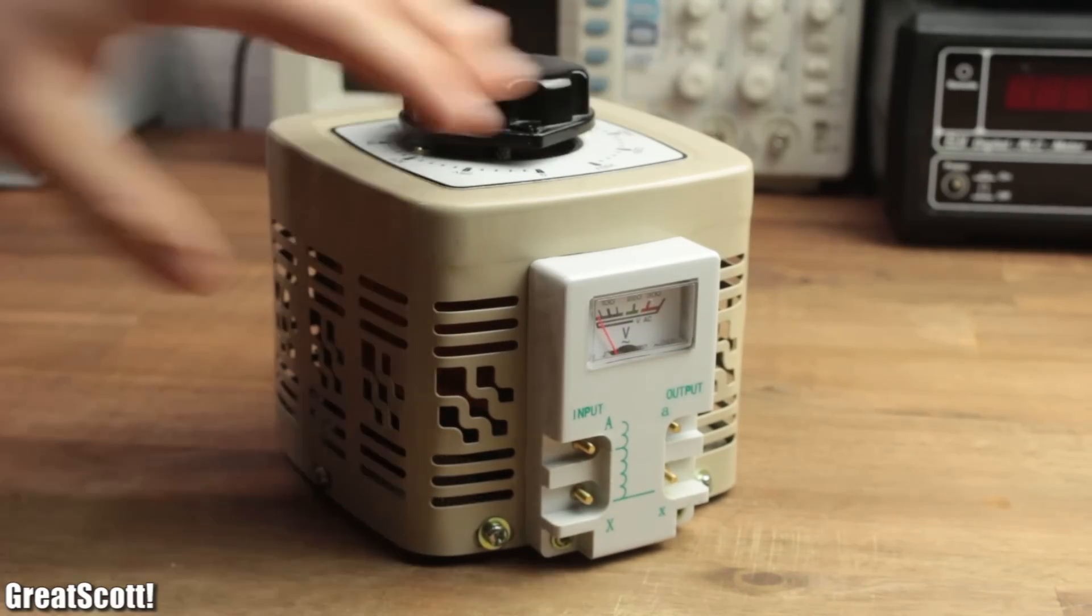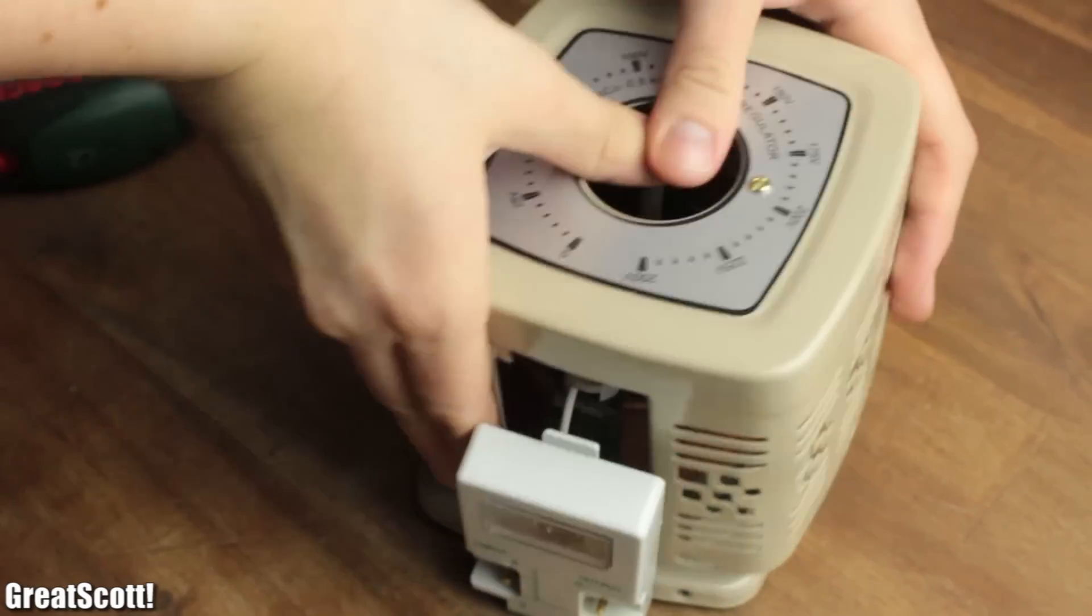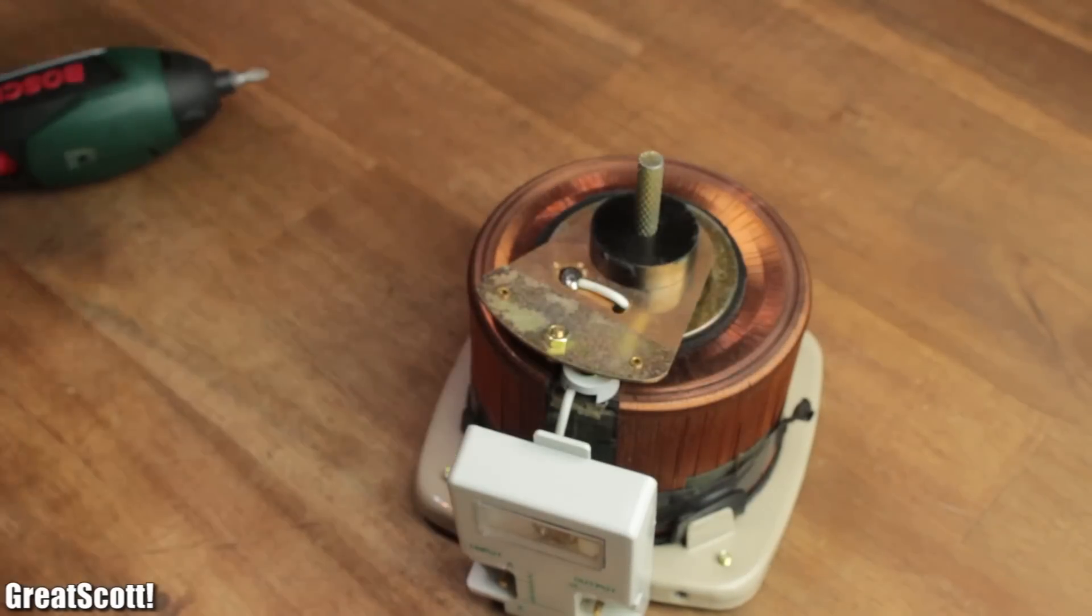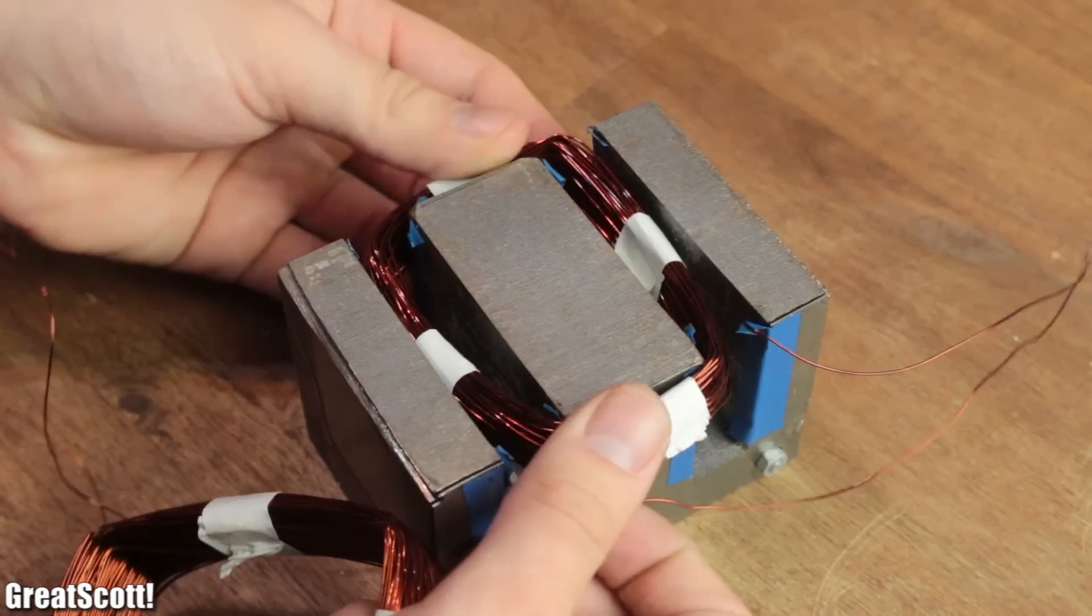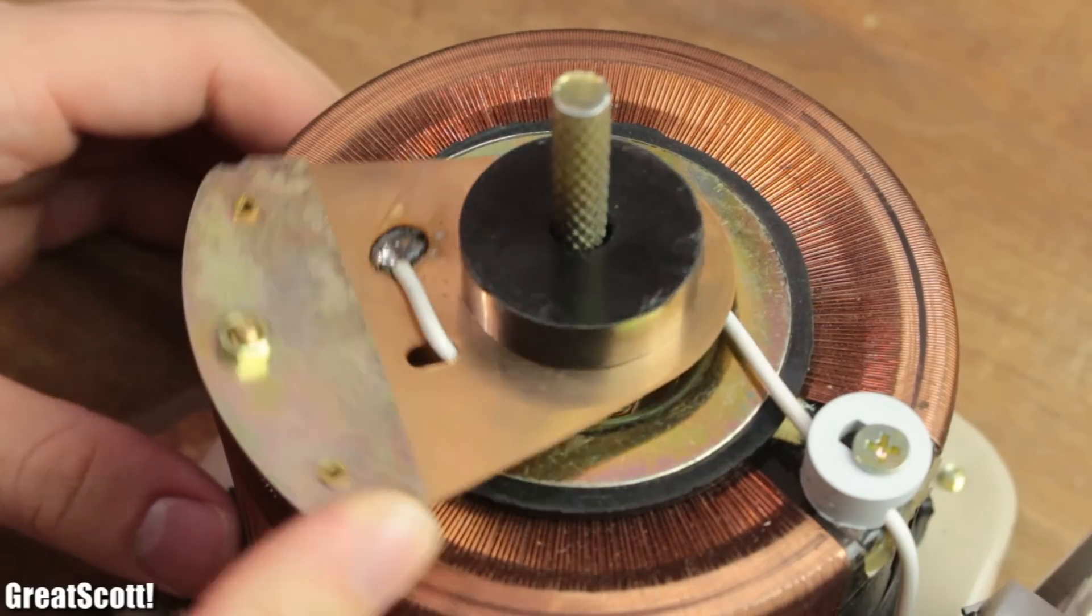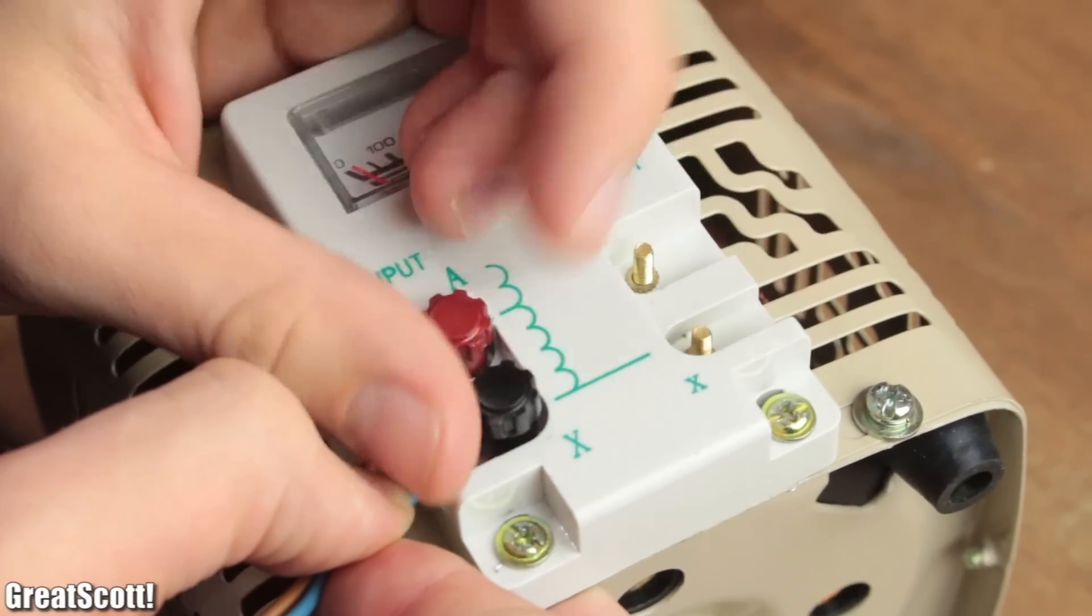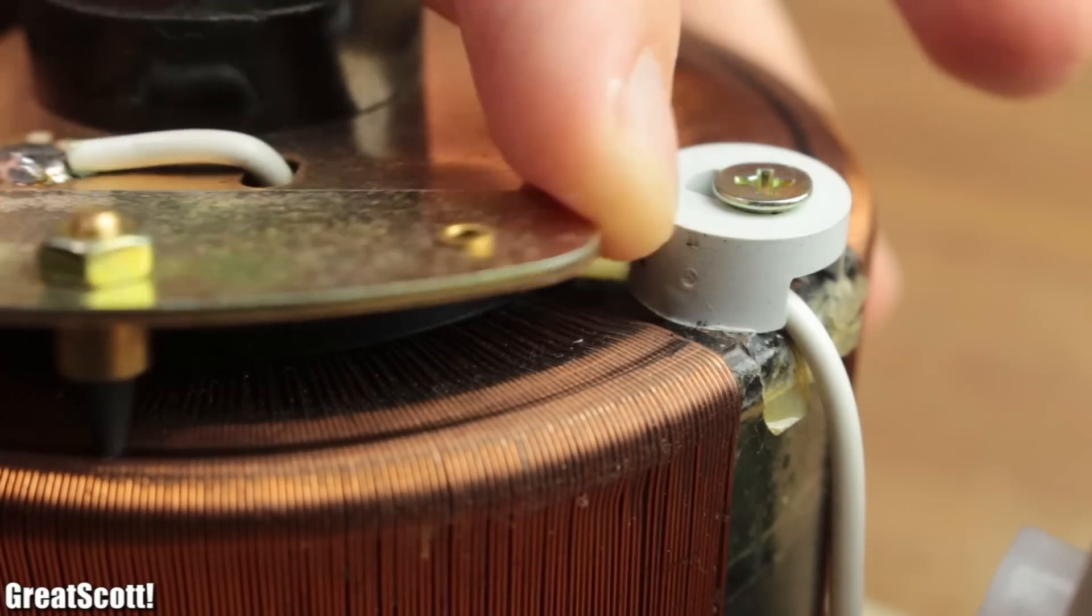First off, let's take a closer look at the transformer. The symbol on the front and a closer inspection without the outer case shows us that this is an auto transformer. In comparison to regular transformer with two coils, this one only has one. But it still can create a variable AC voltage just fine by moving a wiper along this coil.